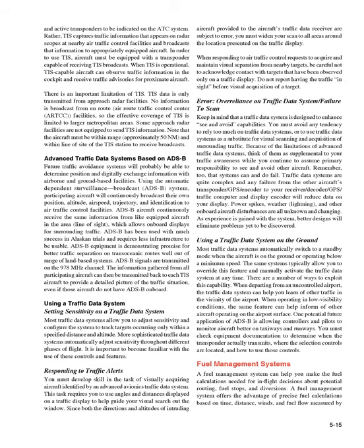TIS captures traffic information that appears on radar scopes at nearby air traffic control facilities and broadcasts that information to appropriately equipped aircraft. In order to use TIS, aircraft must be equipped with a transponder capable of receiving TIS broadcasts. When TIS is operational, TIS-capable aircraft can observe traffic information in the cockpit and receive traffic advisories for proximate aircraft. There is an important limitation of TIS: TIS data is only transmitted from approach radar facilities. No information is broadcast from en-route Air Route Traffic Control Center, ARTCC, facilities, so the effective coverage of TIS is limited to larger metropolitan areas. Note that the aircraft must be within range — approximately 50 nautical miles — and within line of sight of the TIS station to receive broadcasts.